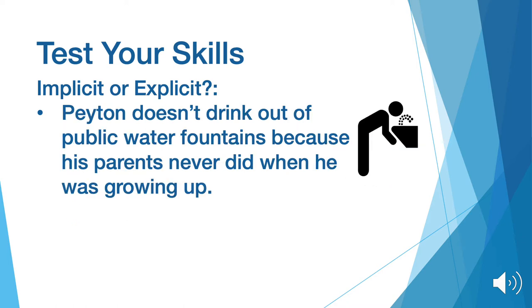Let's try another. Payton doesn't drink out of public water fountains because his parents never did when he was growing up. This example is implicit. We know that this is implicit because it shows that Payton's parents had an unconscious influence on his future choices.